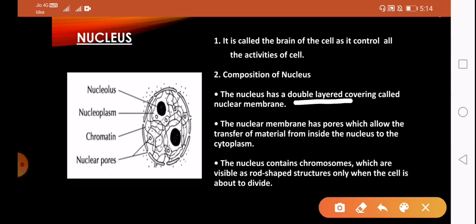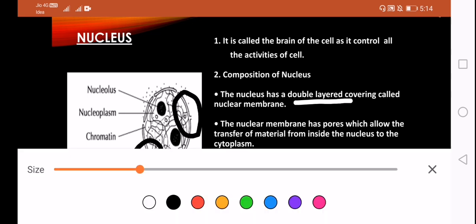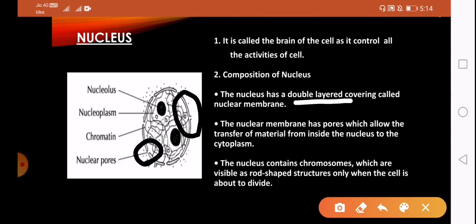The nuclear membrane has pores present on its side, gaps in the membrane called nuclear pores. These nuclear pores allow materials to move in and out of the nucleus from the surrounding cytoplasm.